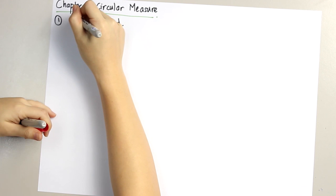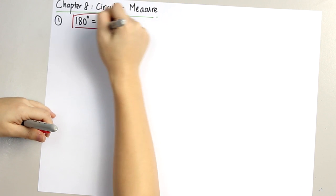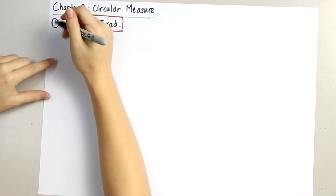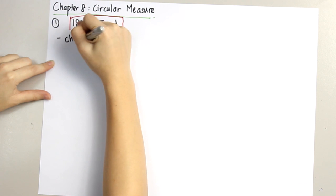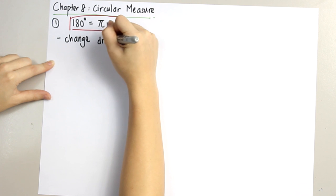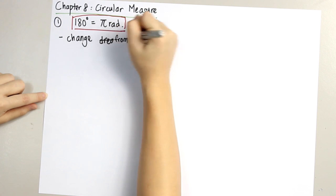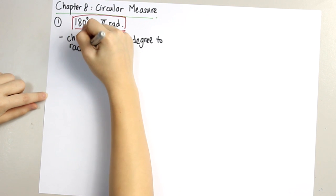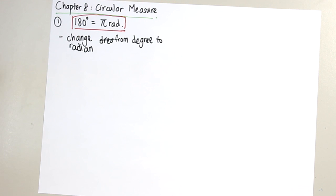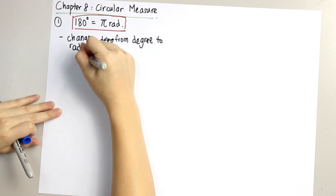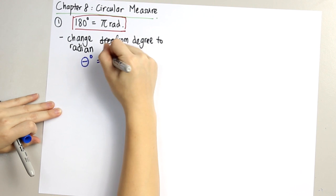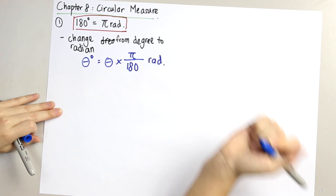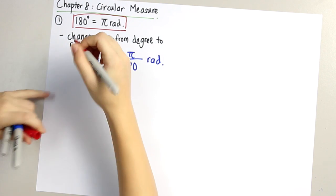Once you remember this formula, it will be very easy to do the two types of questions: changing from degree to radian, and changing from radian to degree. To change from degree to radian, let's say we are given theta degrees — we take theta and multiply by pi over 180 radian. Remember this formula and we can try some examples.